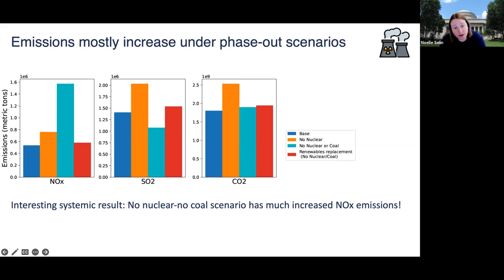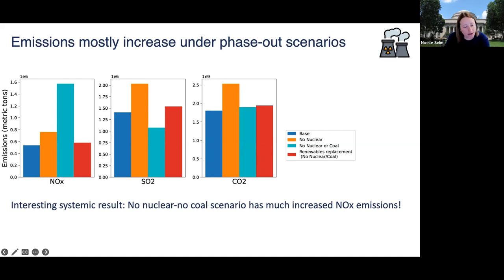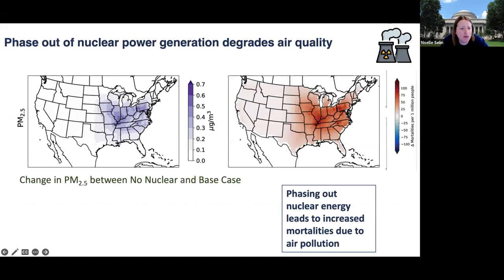When you allow renewables to replace nuclear at a fairly aggressive rate, they're basically compensating for the magnitude of nuclear power, but not in the same places. You do see some compensation from fossil fuel generation, which changes a little bit the distribution of who gets affected by pollution. Looking at what happens to PM2.5, we see an increase in PM2.5 between the no-nuclear and base cases, and increased mortalities due to air pollution. Even in the base case with renewables, there's still some increase in air pollution because the renewables just about but not quite cover the reduced generation of the nuclear plants.